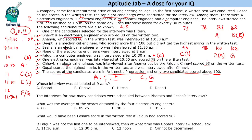Since Bharat scored 88 and the 10 AM slot has an electronics engineer scoring 78, Bharat is not in the 10 AM slot. The 10 AM electronics engineer scoring 78 must be out of D and H. Since Deepthi is the mechanical engineer, Hitesh is the 10 AM electronics engineer scoring 78, and Deepthi is interviewed at 9 AM as the mechanical engineer.